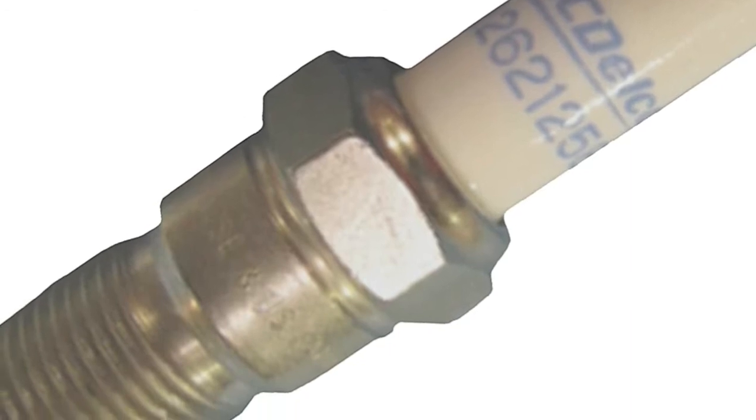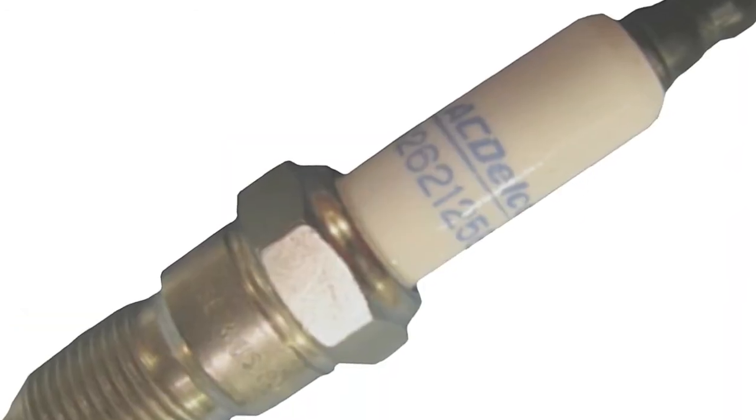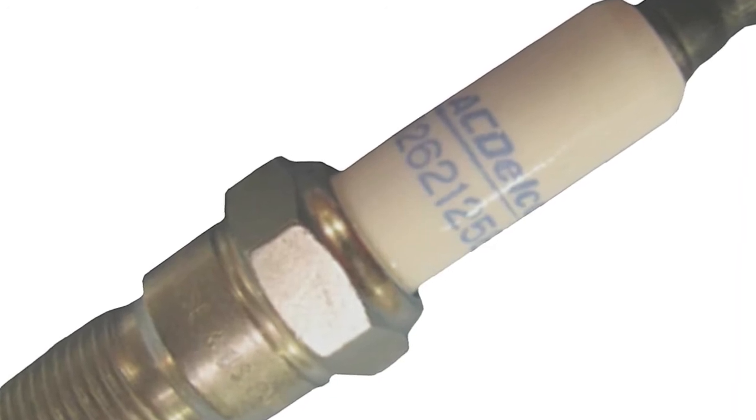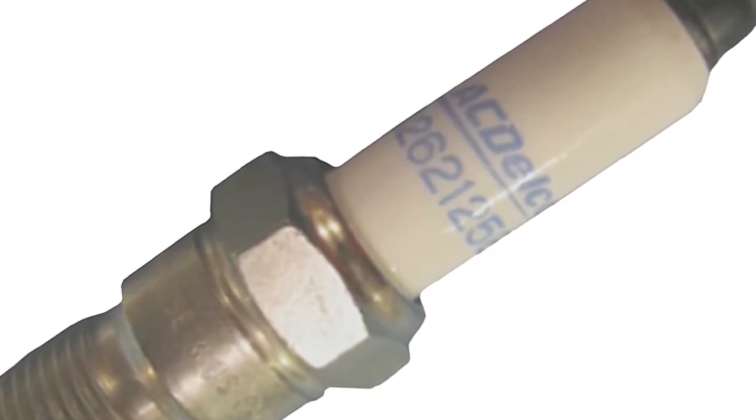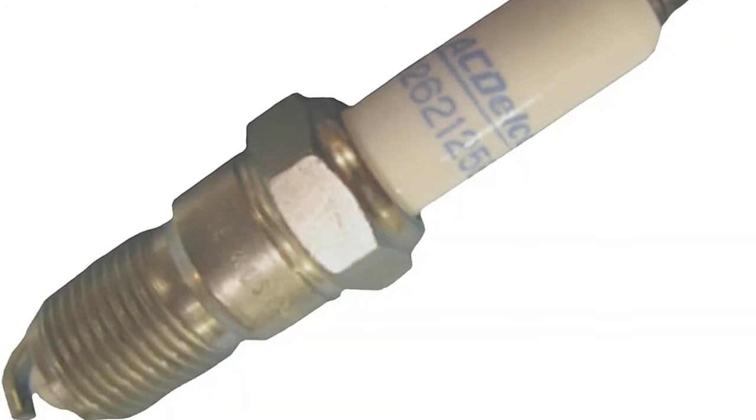Iridium fine wire electrode helps improve ignition of the fuel and burns away carbon deposits on the tip of the plug as they form to help improve fuel economy. One piece suppressor seal blocks radio frequencies that can affect vehicle electronics.